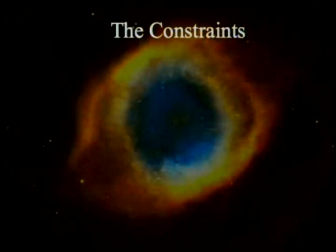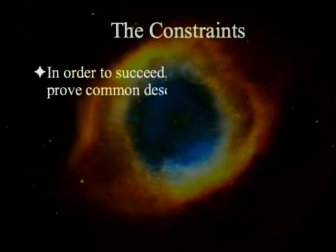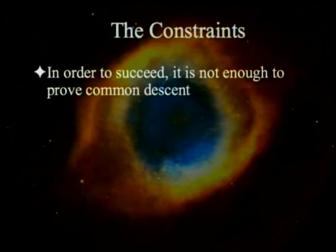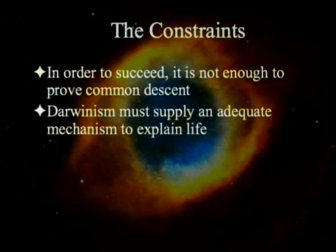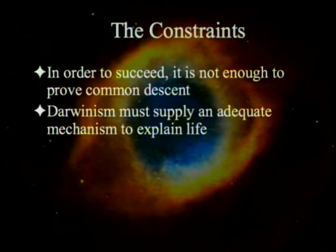The real question is not 'does evolution exist?' The real question is 'can evolution explain the appearance of design?' That's the real question. So, what constraints are there on the theory of evolution? In order to succeed, it's not enough to prove common descent, because common design could explain some of common descent. What Darwinism must supply is an adequate mechanism to explain life. Does the mechanism do what it's supposed to do? That's the question.